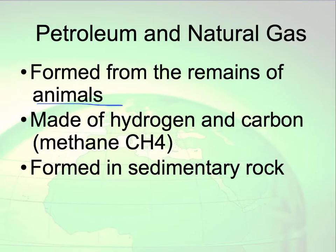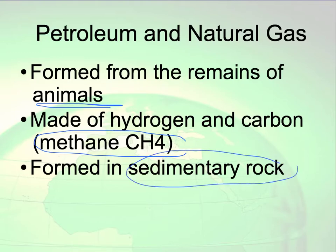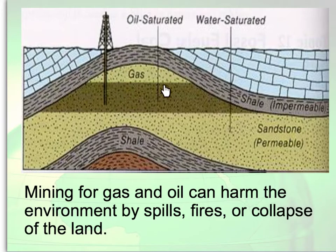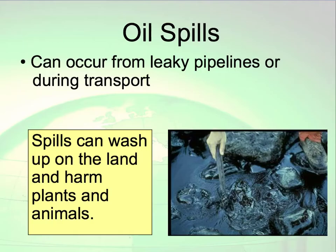Petroleum and natural gas are formed from the remains of animals. They are made of methane, carbon, and hydrogen, and they are also formed in sedimentary rocks. You can see here where we would get our natural gas and oil — that is where we would mine for it. However, it can harm the environment through oil spills, fires, or land collapse. Oil spills can occur from leaky pipelines or during transport, and we all remember the Gulf of Mexico oil spill and its detrimental effects on plants and animals in the surrounding area.